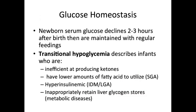It can be expected for newborn glucose concentrations to decline within the first two to three hours after birth. Transitional hypoglycemia describes infants who are inefficient at producing ketones, have lower amounts of fatty acids to utilize — such as small for gestational age infants — are hyperinsulinemic — such as infants of diabetic mothers, large for gestational age infants, or post-dates infants — and infants who inappropriately retain liver glycogen stores, such as in metabolic diseases.